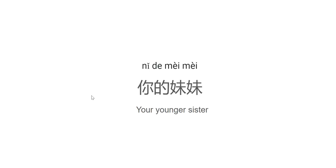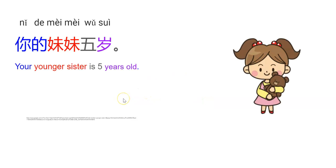And then how to say 'younger sister'? 妹妹 (mèimei). Then how to say 'your younger sister'? 你的妹妹 (nǐdə mèimei). Now how to say 5 years old? First, think how to say 5 in Mandarin: 五. Five years old is 五岁. Then how to say 'your younger sister is 5 years old'? 你的妹妹五岁.